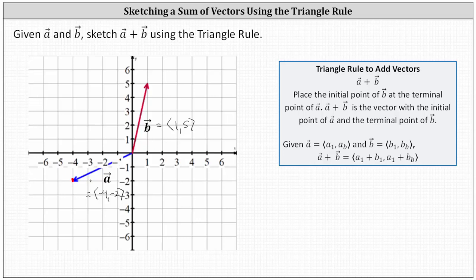From here we move right one and then up five — this is the terminal point of vector b. We now sketch vector b. To form the triangle, we sketch a vector with the initial point at the origin and the terminal point at the terminal point of vector b. This is the resultant vector, or the vector given by the sum of vectors a and b.